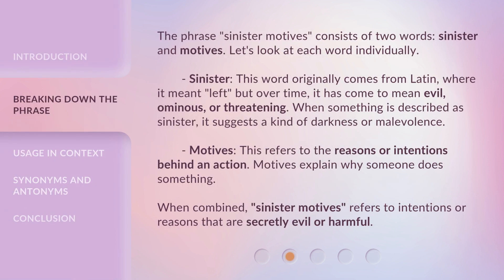The phrase "Sinister Motives" consists of two words: Sinister and Motives. Let's look at each word individually. "Sinister" — this word originally comes from Latin, where it meant "left." But over time, it has come to mean evil, ominous, or threatening. When something is described as sinister, it suggests a kind of darkness or malevolence.